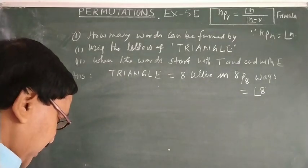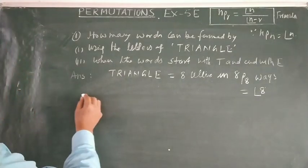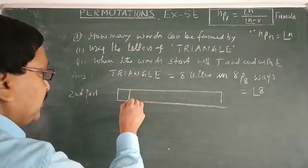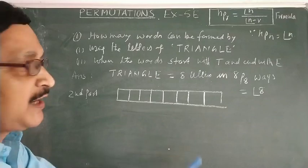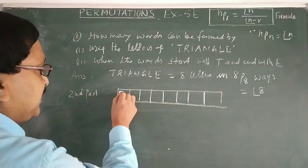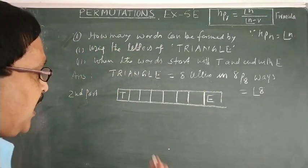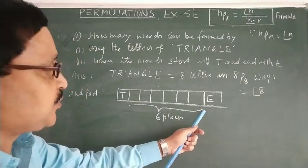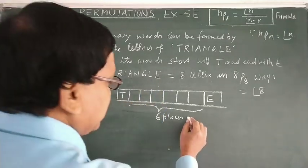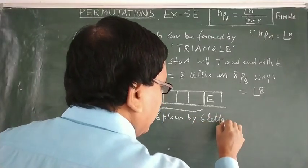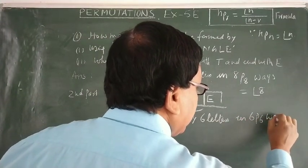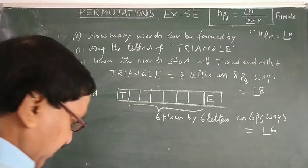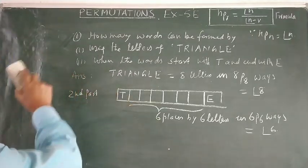Second part: how many words start with T and end with E? The first place is fixed for T and the last place is fixed for E. There are now 6 remaining places to be filled by 6 remaining letters, giving 6P6 = 6! ways.